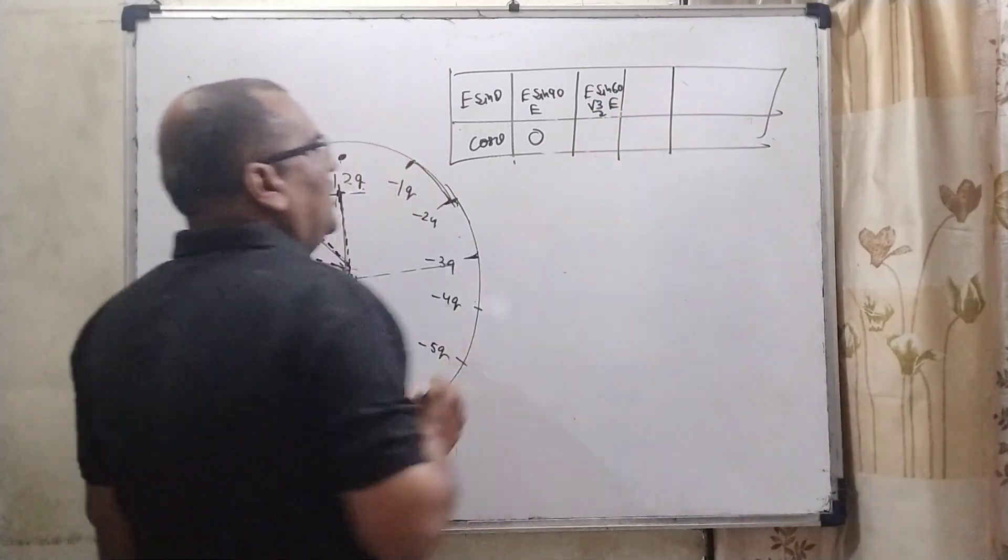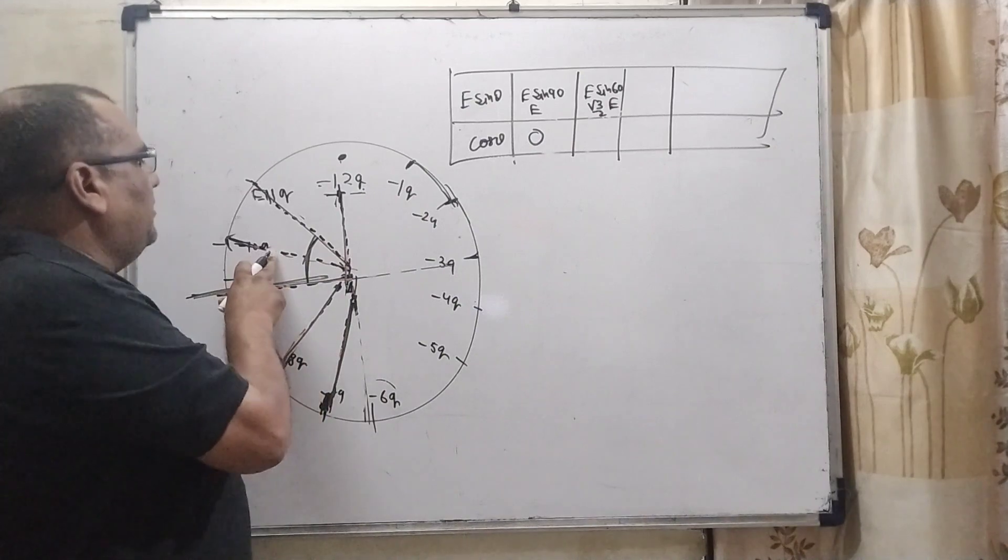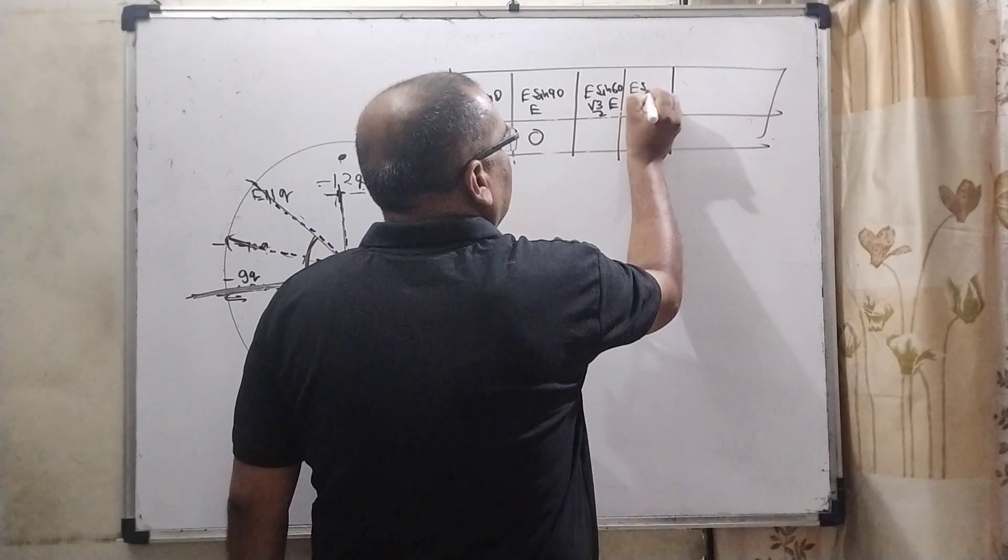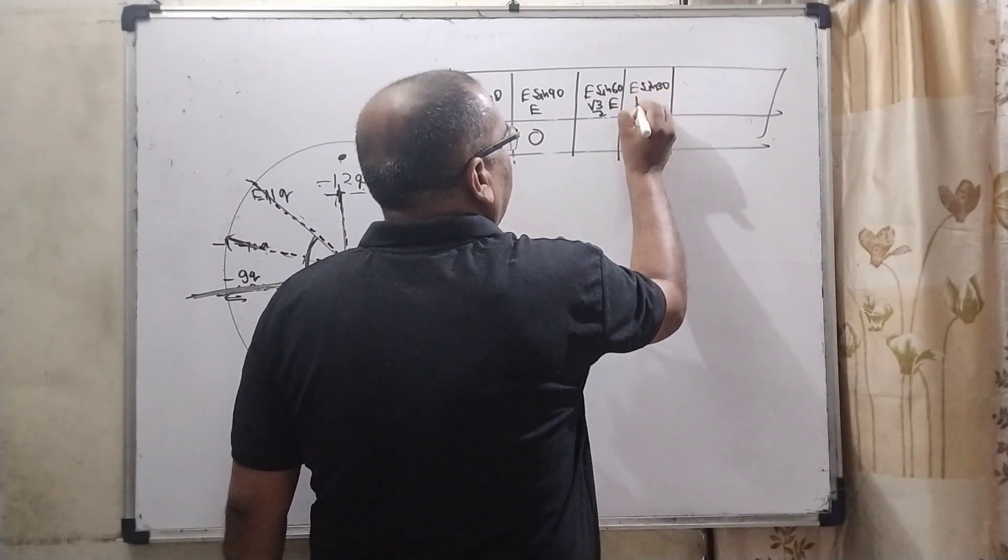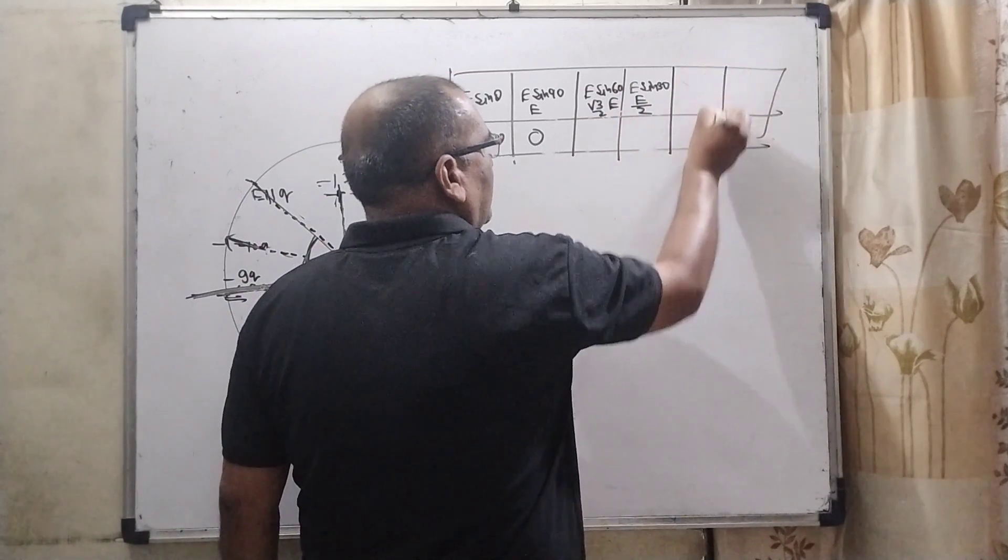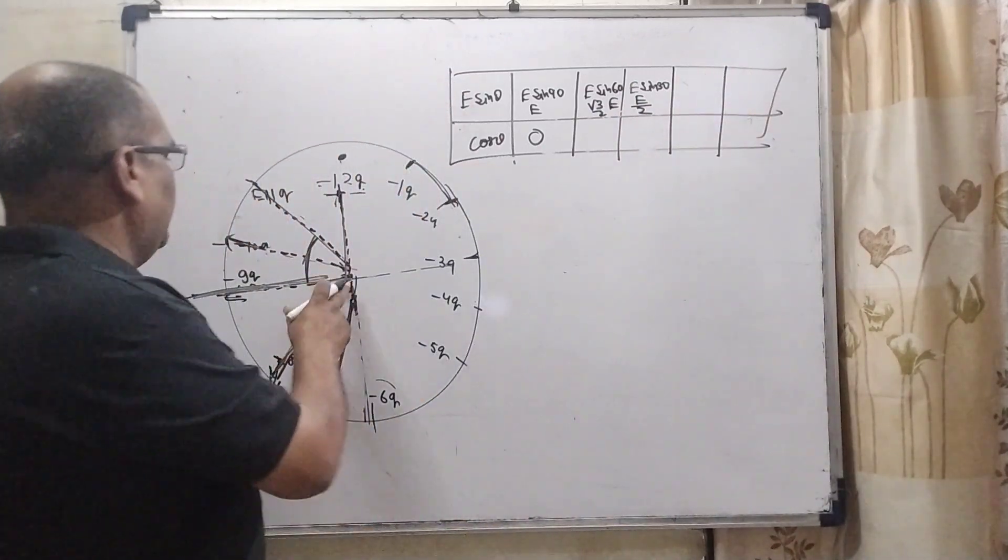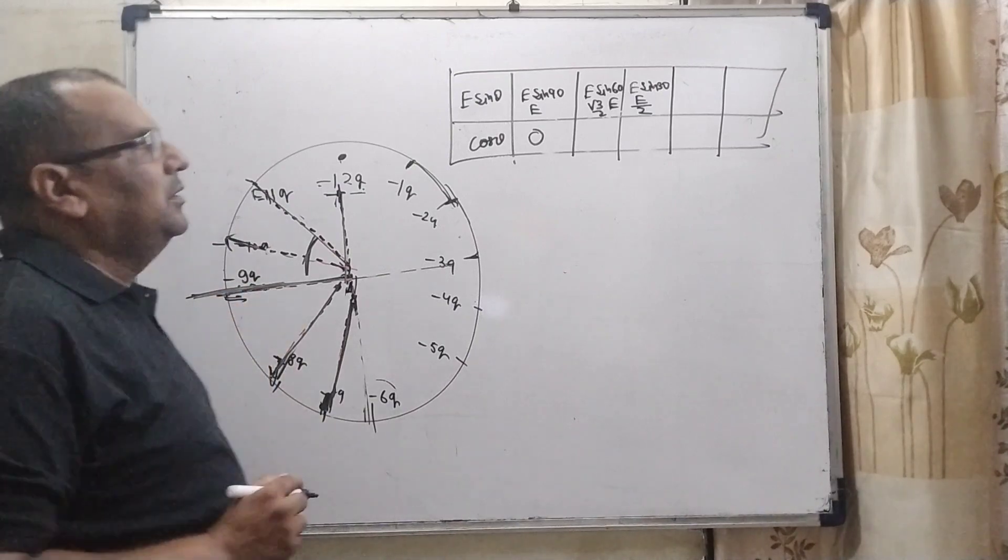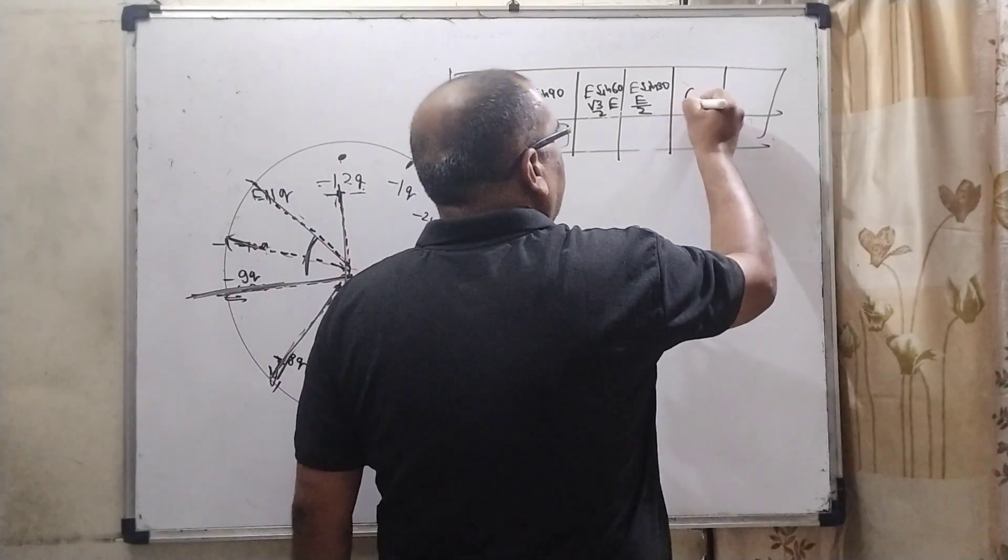Now here this component of sine component, sine 30, E sine 30, which means E sine 30 is 1 by 2 means E by 2. Now this component here, sine component 0, it means your value of electric field is 0.